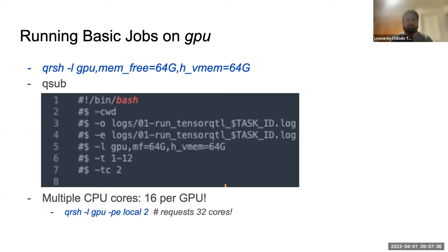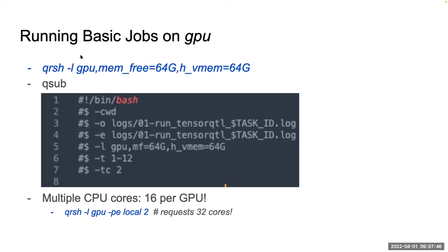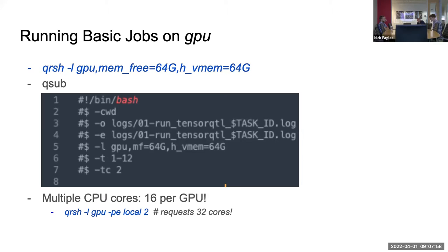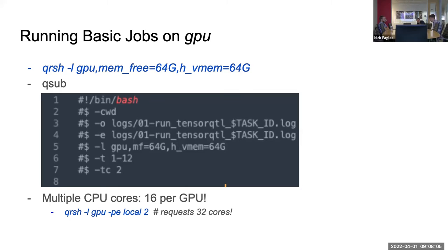Maddie asked: is the minimum number of cores you get always 16? Yes. And is there a maximum? If you request all the cores on the node, it'd be 48, which you'd do with dash-PE local three. It's quite different from the shared queue or other queues.